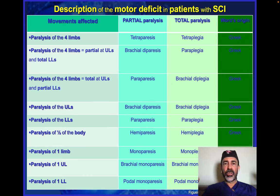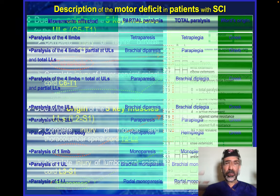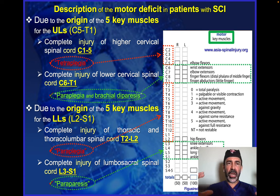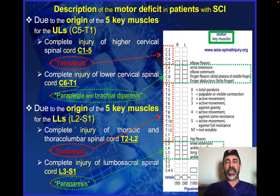Based on that, we built those tables, which you can find in the original paper. As a refresh before concluding: to describe the motor deficit in patients with spinal cord injury, always focus on the level of the key muscles for the upper limbs related to the brachial plexus, and lower limbs related to the lumbosacral plexus. The five key muscles for the upper limbs span myotomes C5 to T1, and for the lower limbs from myotomes L2 to S1.